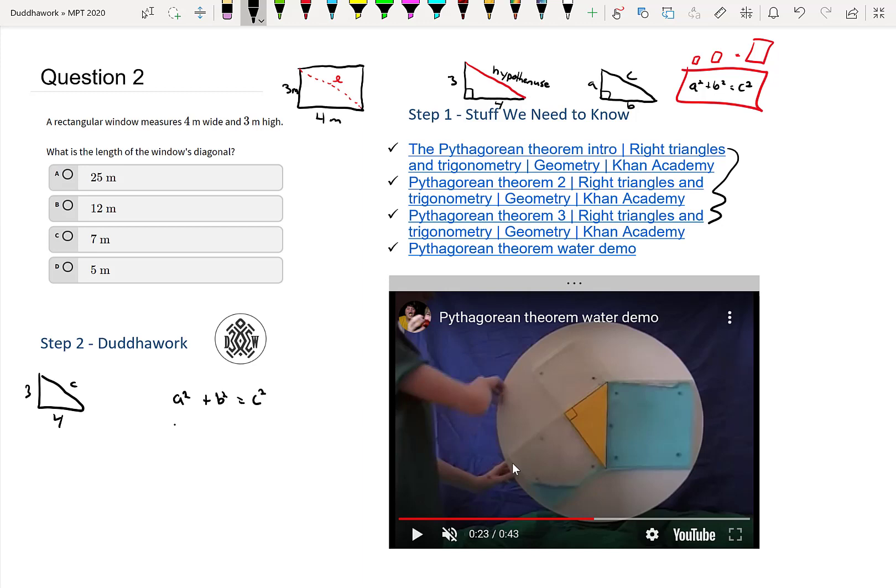So we have that 3 squared plus 4 squared is equal to c squared. And 3 squared is 9 plus 4 squared, that's 16, and then that's c squared. So if I write c squared is equal to 9 plus 16, that's 25. And now how do I get rid of a squared? Well, I can square root and notice that we do the plus minus whenever we square root. And that's the square root of 25.